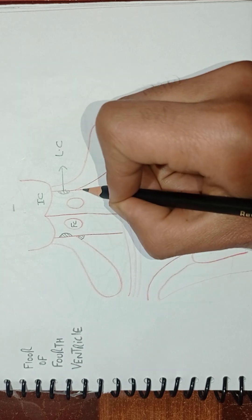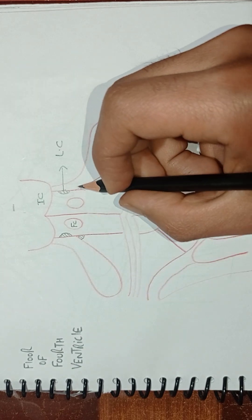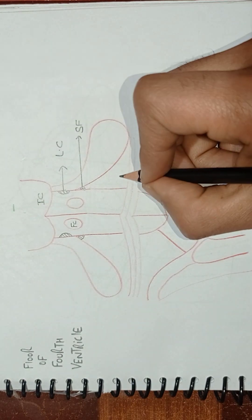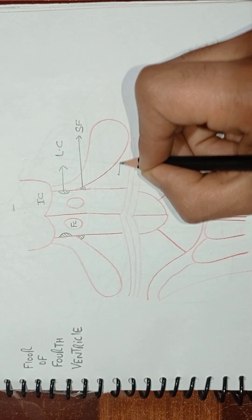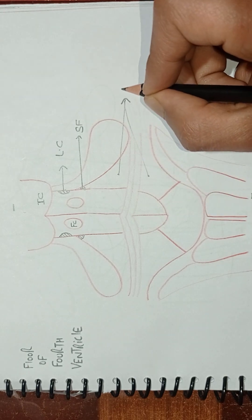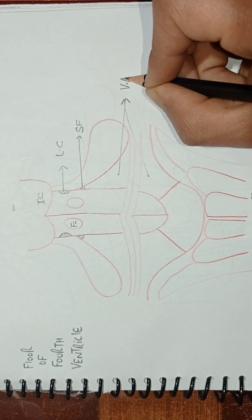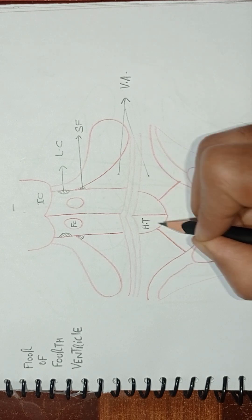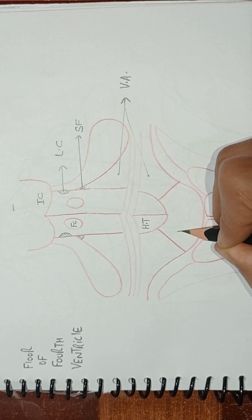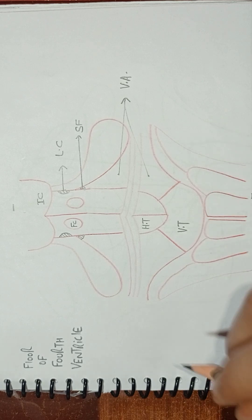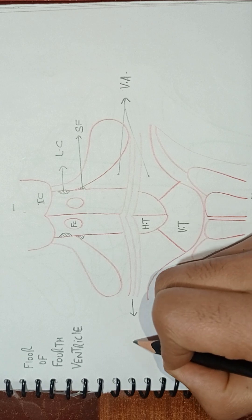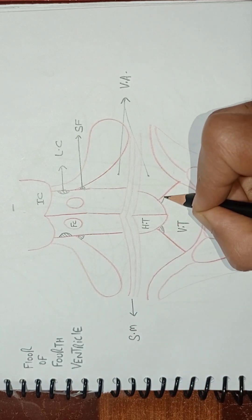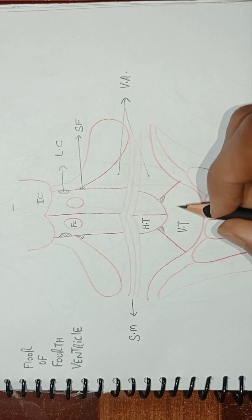The two structures here are the superior fovea. These two areas are the vestibular area. This area here is the hypoglossal trigone. And this area here is the vagal trigone. These three lines that we drew are the stria medullaris. And these two structures here — this is the first and this is the second — are the inferior fovea.